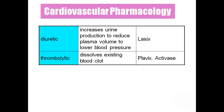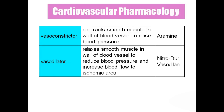Cardiotonics increase the force of heart contraction to treat congestive heart failure. Diuretics increase urine production, which decreases blood volume and therefore decreases blood pressure. Thrombolytics dissolve blood clots. Vasoconstrictors constrict blood vessels to increase blood pressure and are given for hypotension. Vasodilators widen blood vessels to decrease blood pressure and are given for hypertension.